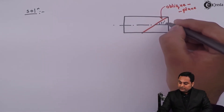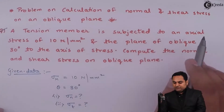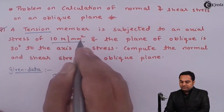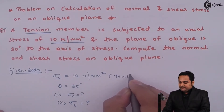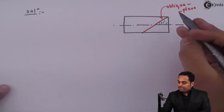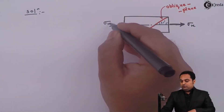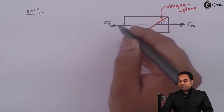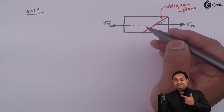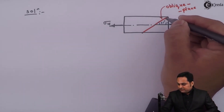This angle is 90 degrees. It was given that a tension member is subjected to an axial stress of 10 Newton per mm square. Since it is a tension member, the nature of the stress is tensile — a pull type of stress — so I have to show it on the diagram as Sigma X. Because of the effect of this Sigma X, there will be stresses on this oblique plane, specifically normal and tangential stresses whose values we have to find out. The first thing is to know the angle made with respect to the vertical.